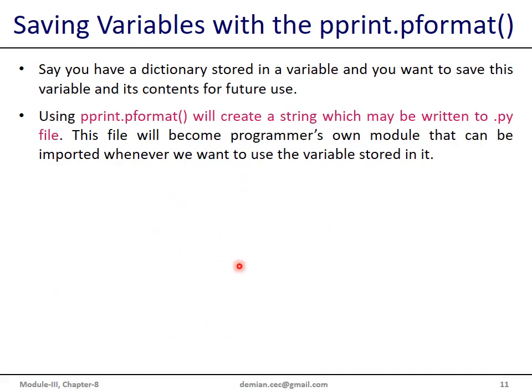In Python, we can create modules containing variable data using the pprint module. The function pprint.pformat will allow us to store a string in a file with a .py extension, and this file becomes its own module for the program, which can be imported whenever there is a need for the variables stored in the form of string representation.